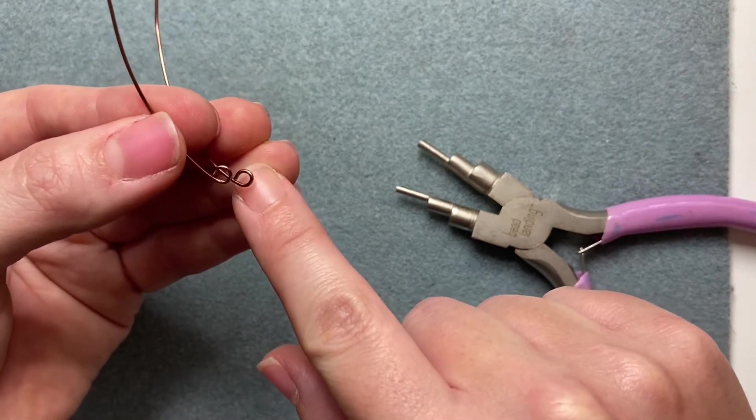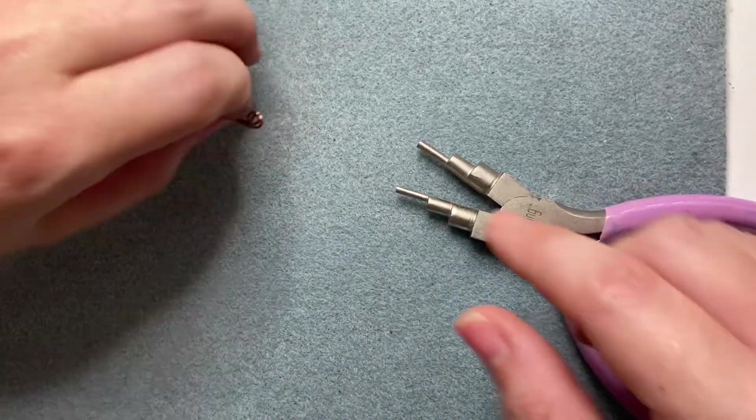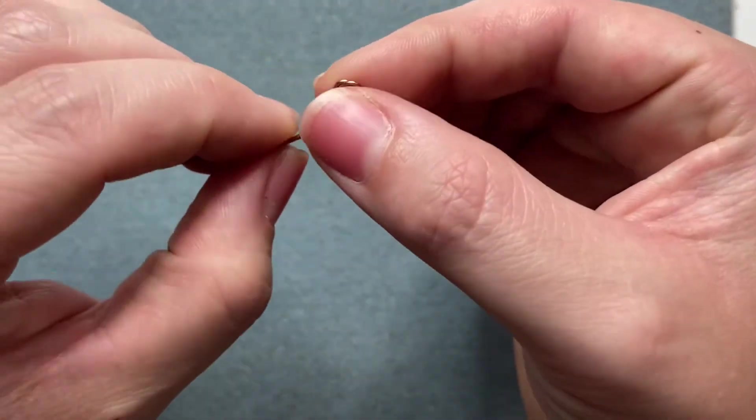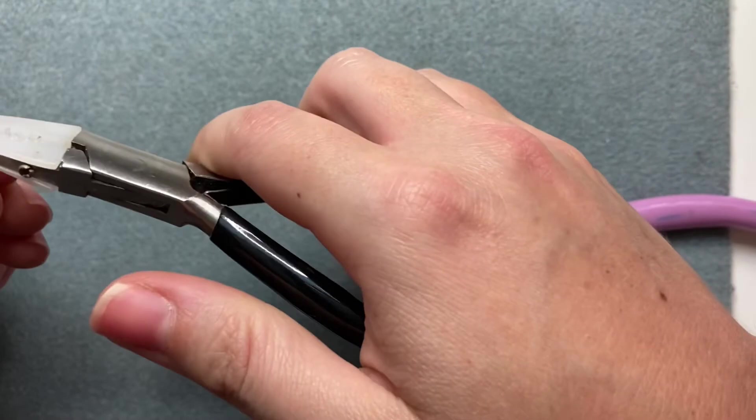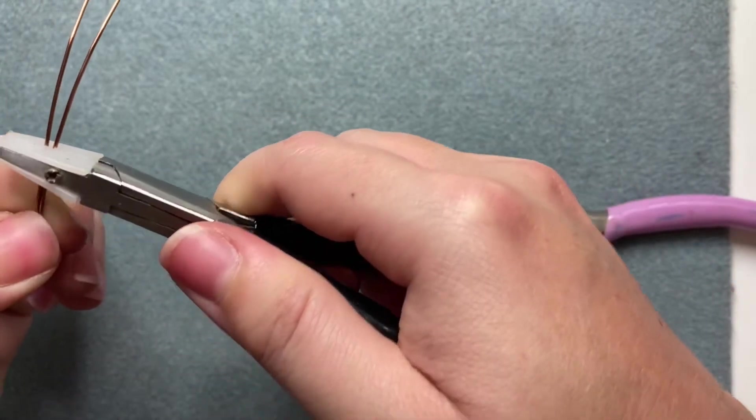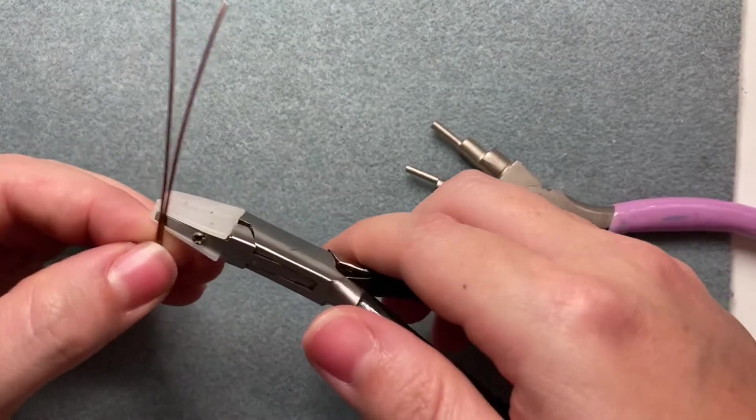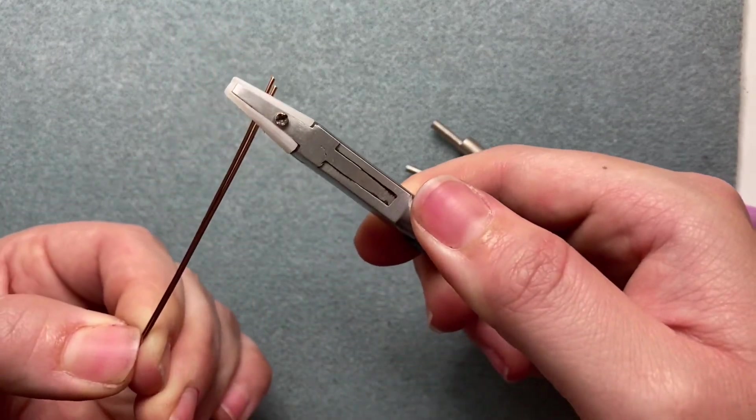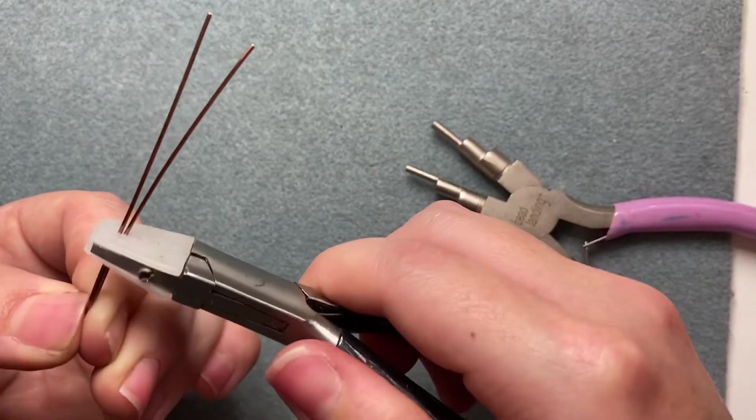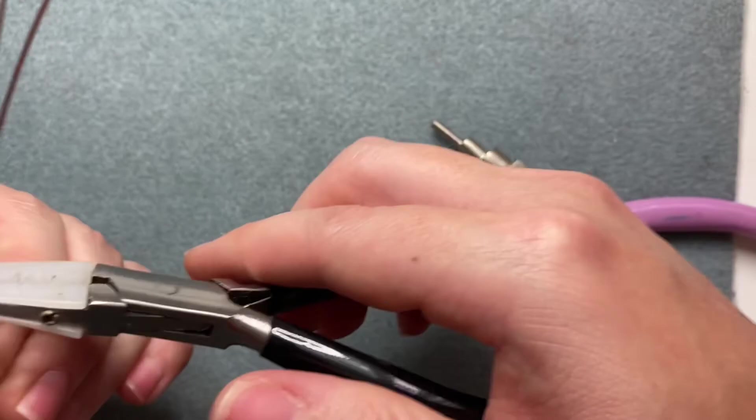So you're going to grab both sets of wire and I just want to straighten this a little bit because it's got like a little bit of a curvature. So I'm just taking my nylon jaw pliers and just kind of moving down the wire to kind of get that curvature out of there.